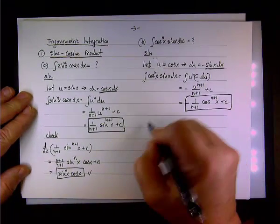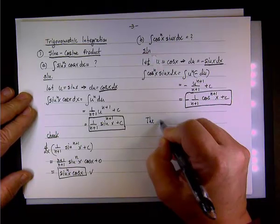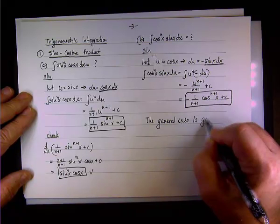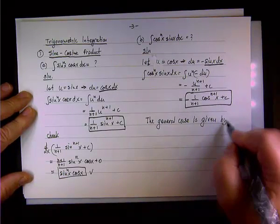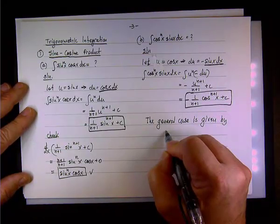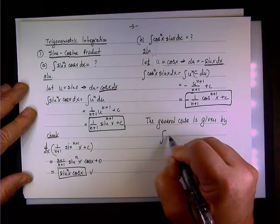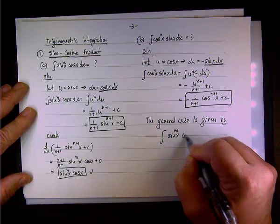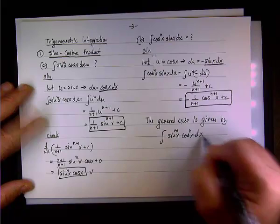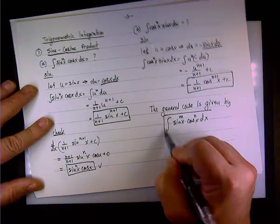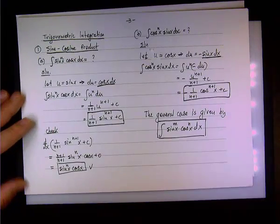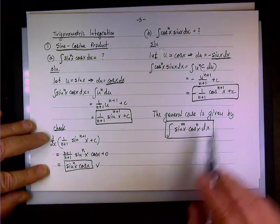What is the general case when we're looking at the sine-cosine product? The general case is given by the following: we look at the integral of the product sine x to the power of m times cosine x to the power of n dx. This is the general case.